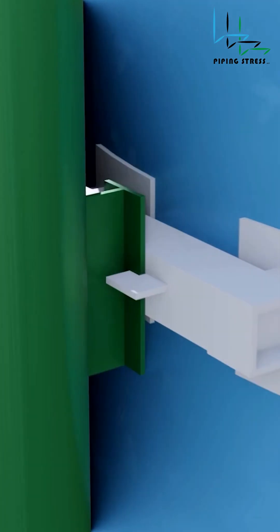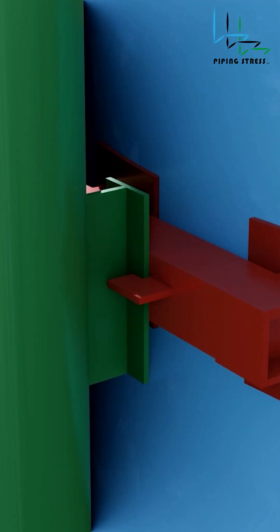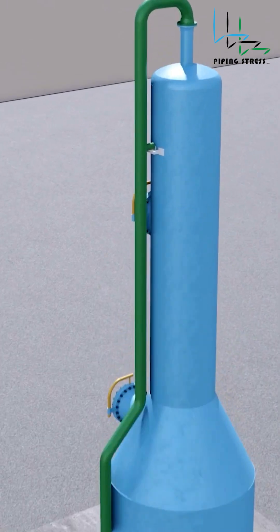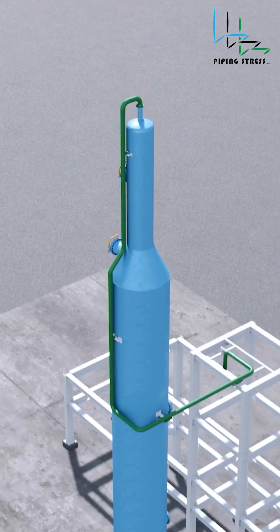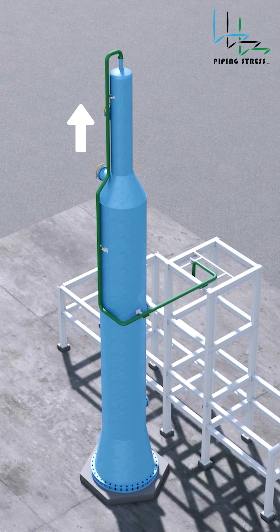This type of support approach will cause the pipe to expand upward during operation, especially at high temperatures, since it will come into contact with the rigid supports. As a result, this creates a high moment on the top nozzle. This is something we want to avoid.